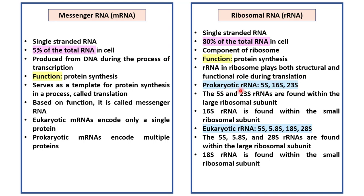rRNA plays a fundamental role in protein synthesis. rRNA in ribosome plays both structural and functional role during translation. Prokaryotes have three rRNAs: 5S, 16S and 23S. The 5S and 23S rRNAs are found within the large ribosomal subunit.